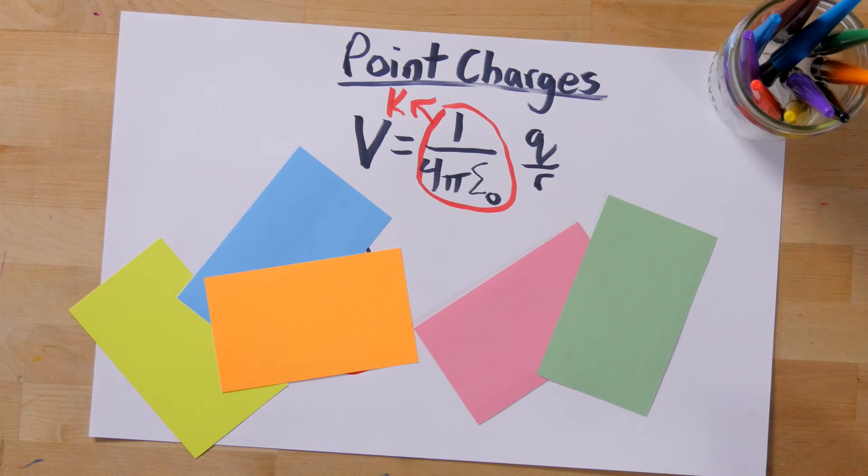But what about two charges? Well this is where the superposition principle comes into play. What this principle implies is that you can separately calculate the potential made by each point charge and add it up.